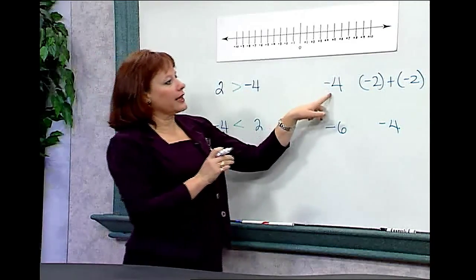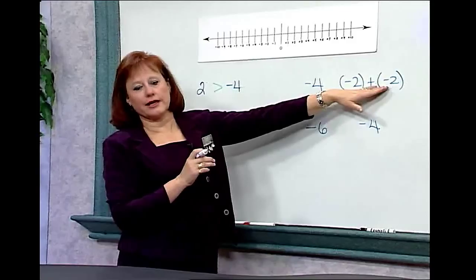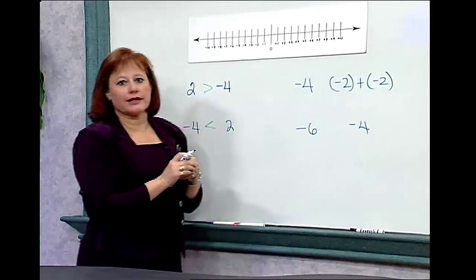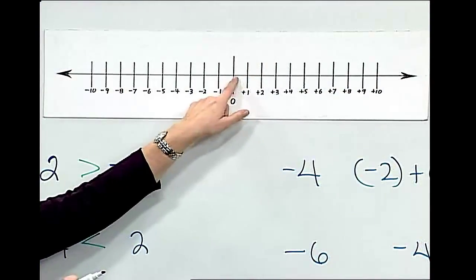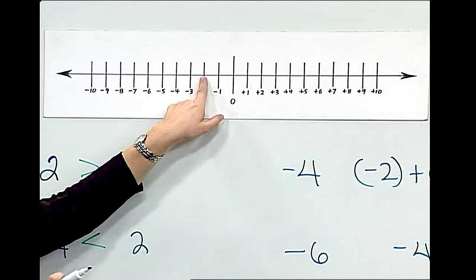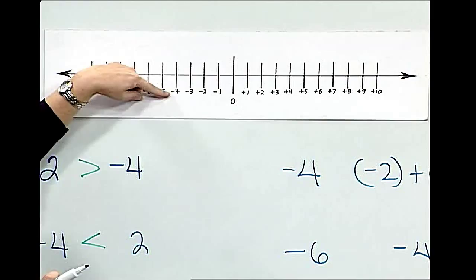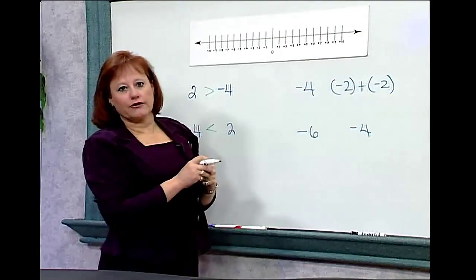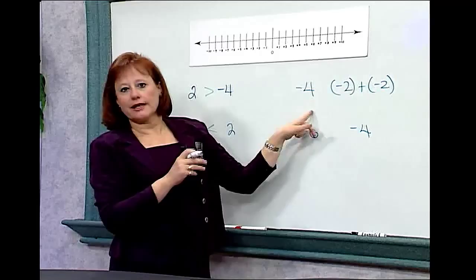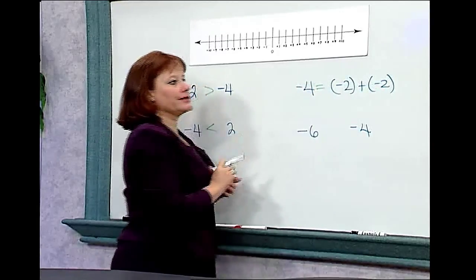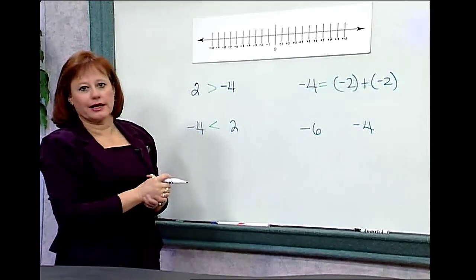As another comparison, we'll look at negative 4 and negative 2 plus negative 2. When we're adding sign numbers, we can start at 0. Negative 2 moves 2 to the left, and adding negative 2 moves 2 to the left again, and it puts us on negative 4. We know that negative 2 plus negative 2 is negative 4. So these have exactly the same value. And we'll say negative 4 is equal to negative 2 plus negative 2.